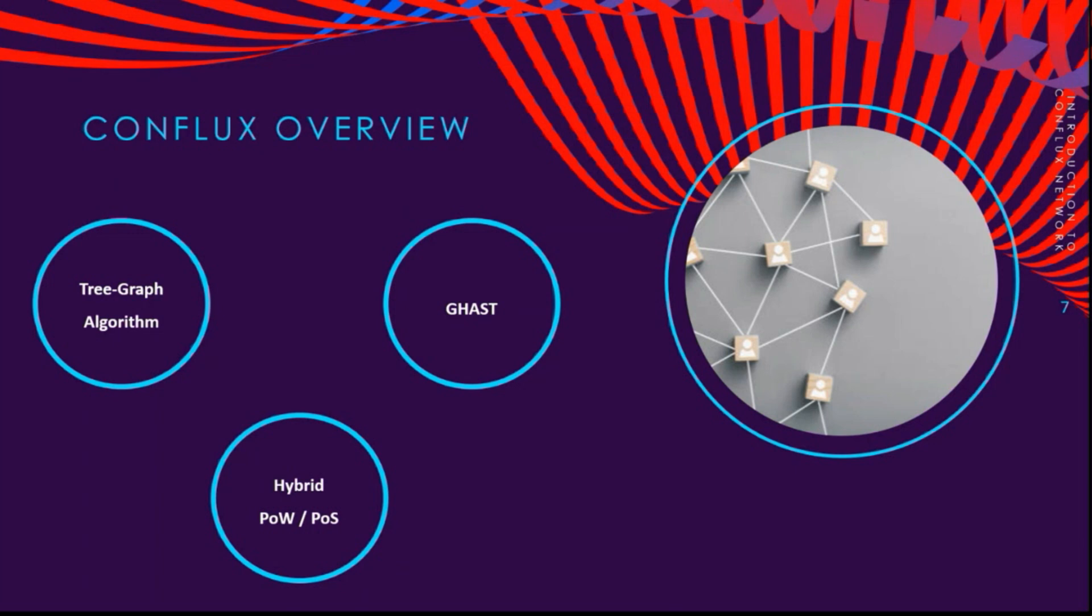Next we have this hybrid Proof of Work plus Proof of Stake consensus. This is another key element of Conflux in that you can combine both the security and reliability of Proof of Work with the efficiency of Proof of Stake. This approach is fundamental for making Conflux what it is actually.